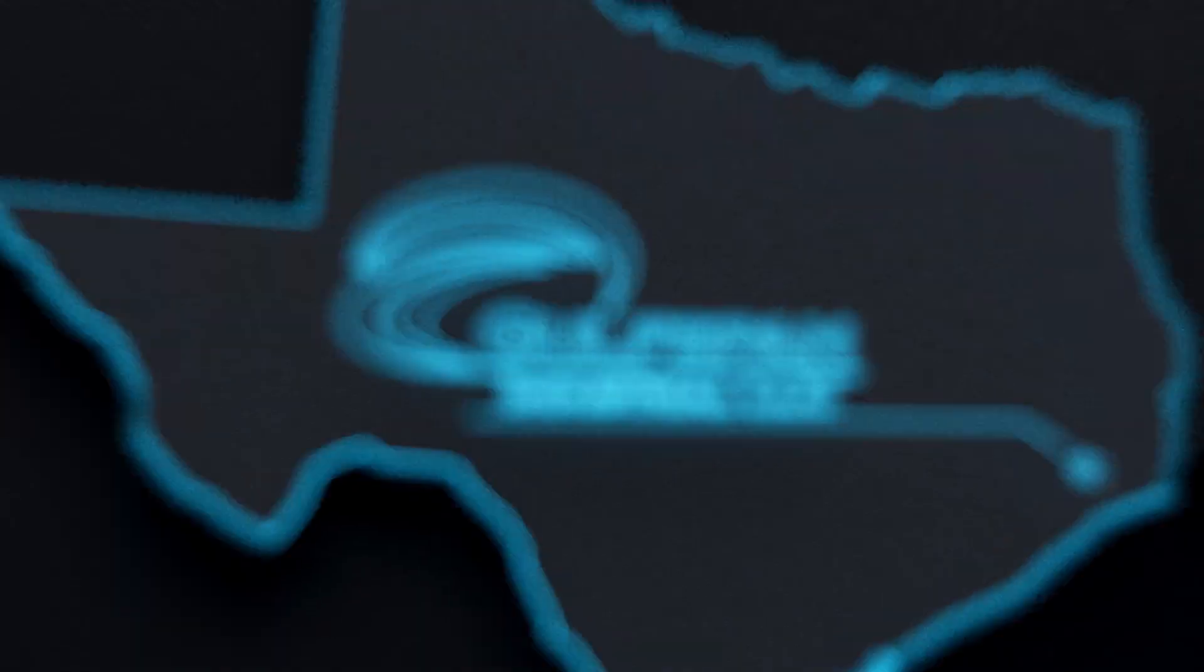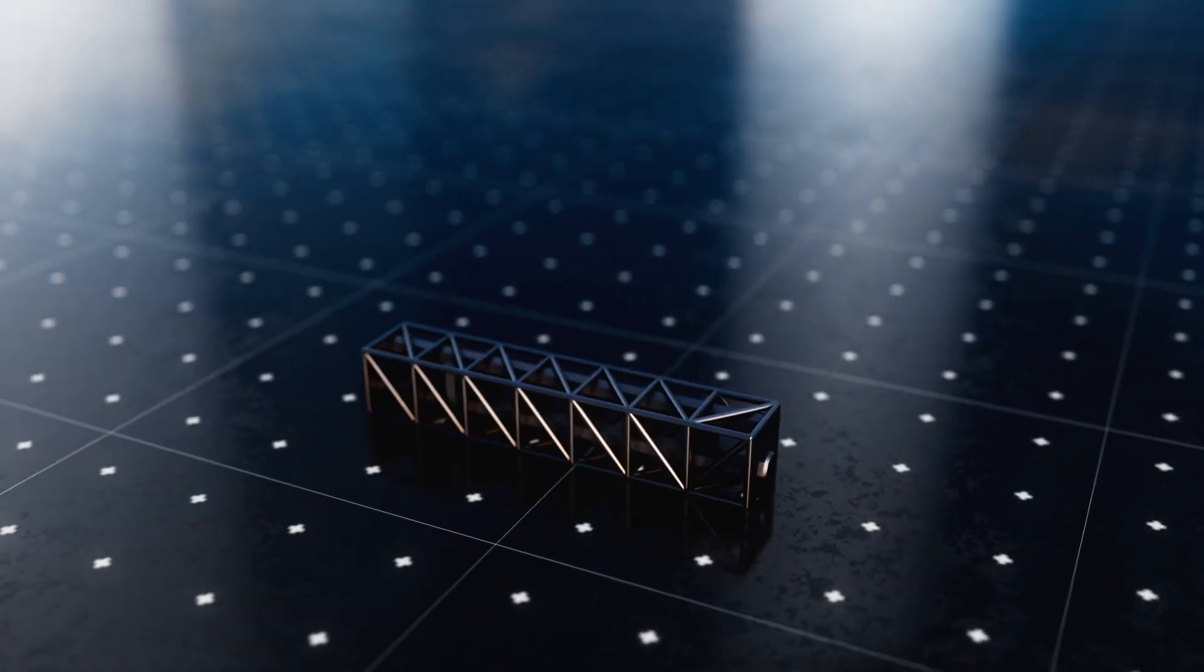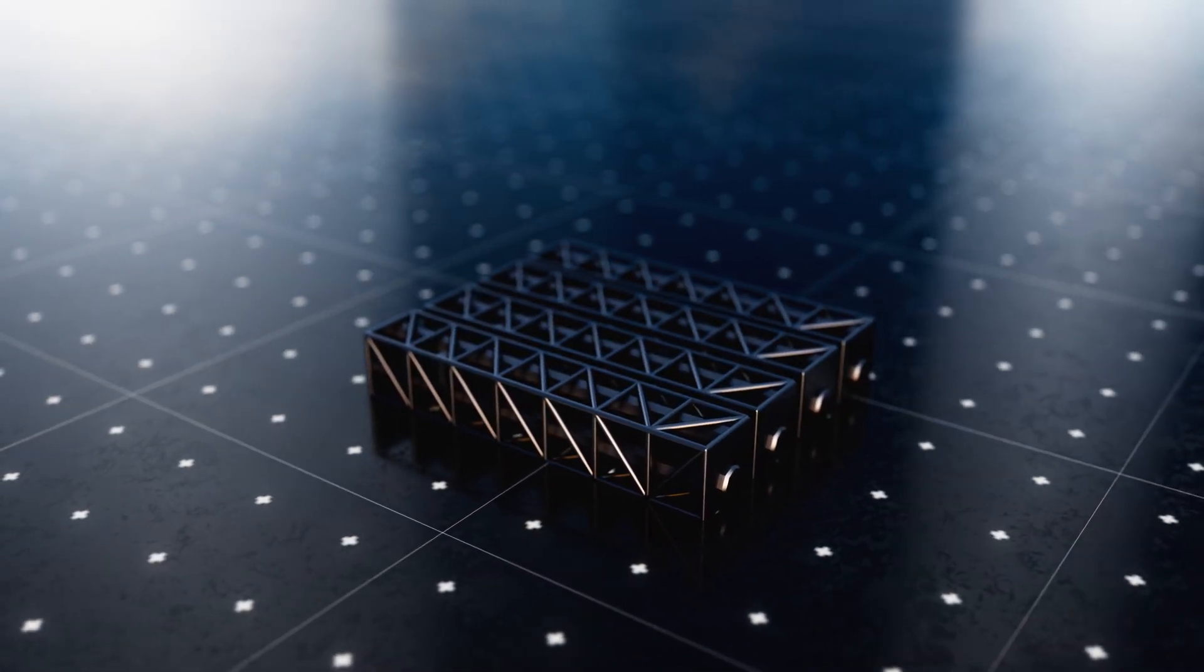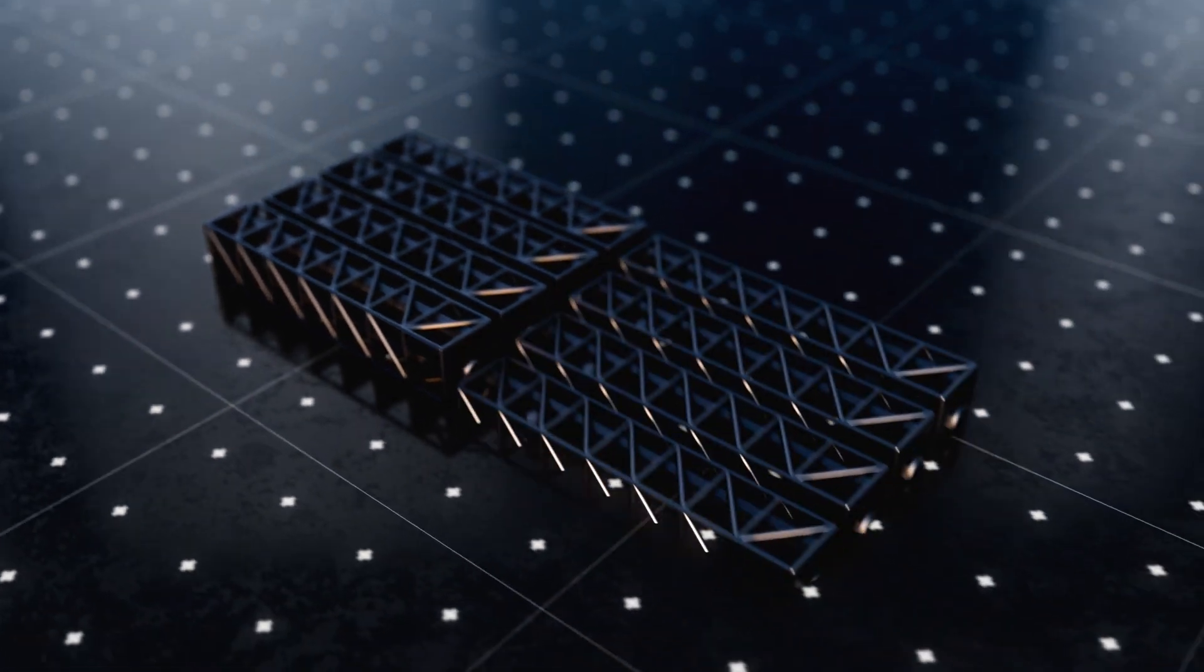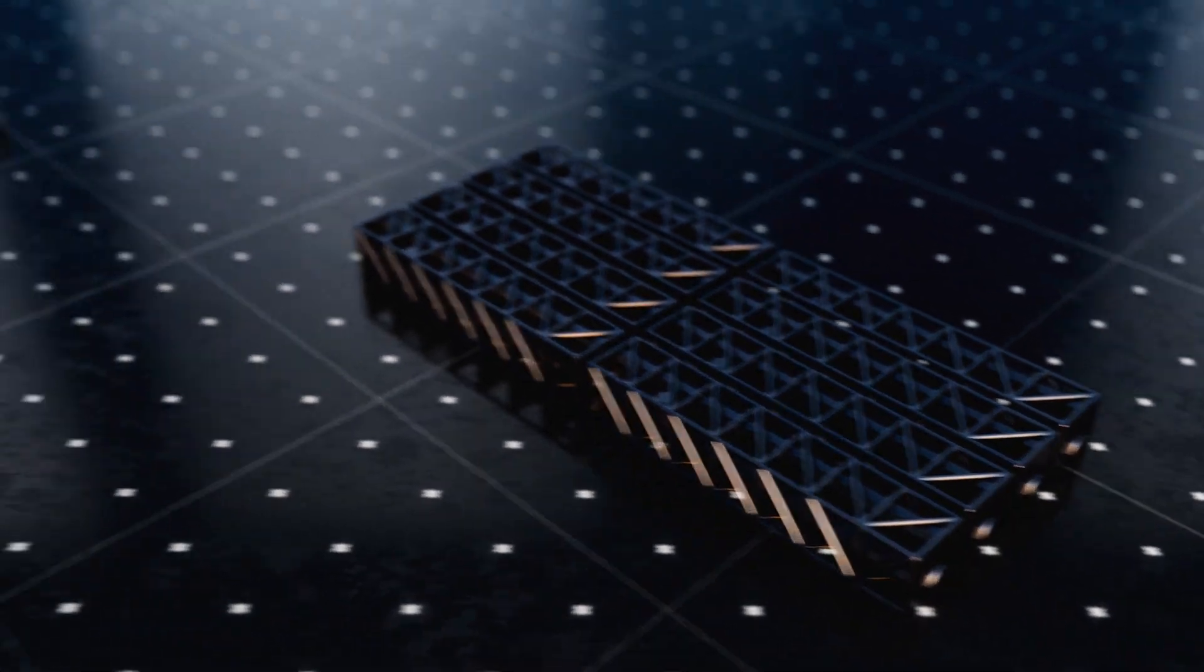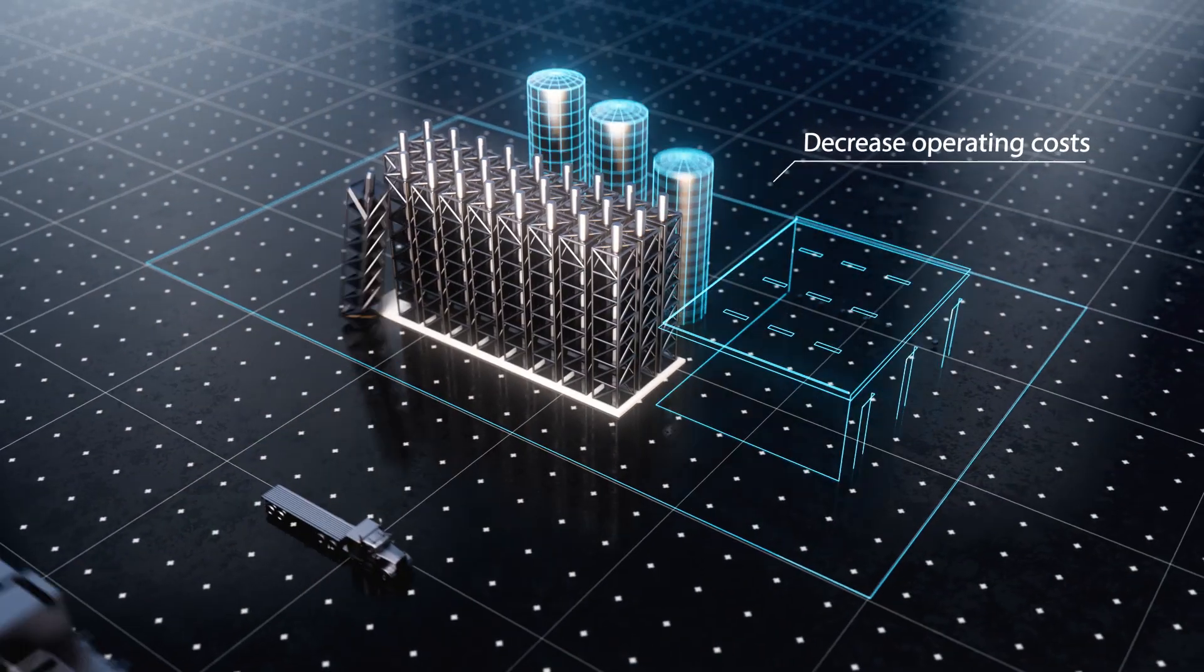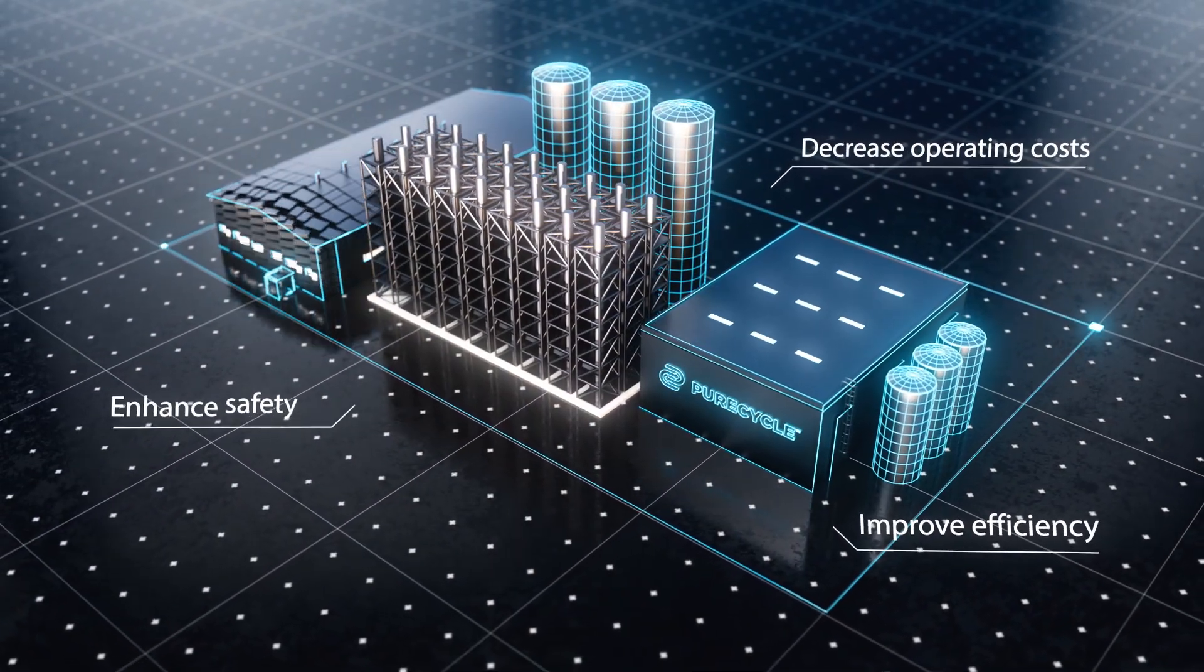PureCycle has partnered with Gulfspan to centralize the building of our plants, which allows us to copy and paste our plant modules. This replication approach from multiple production lines at one site location will speed up the building process, decrease operating costs, improve efficiency, and enhance safety.